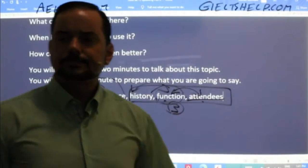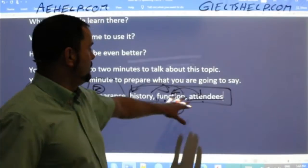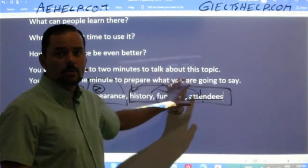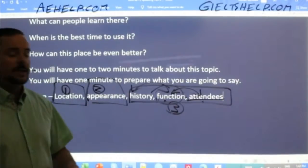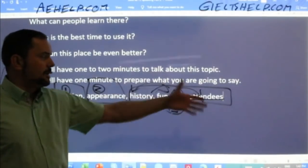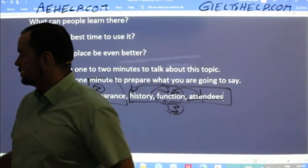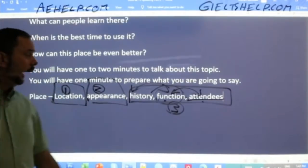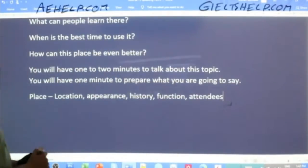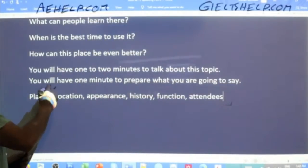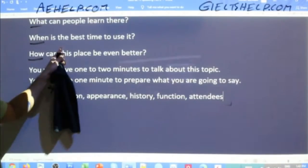So you might talk about function first, then attendees, but you have a little more flexibility with those three. Location and appearance definitely first. History you can talk about at the end if you have more time. What's most important to get those high band scores is to keep these ideas in mind while focusing on the questions on the card.